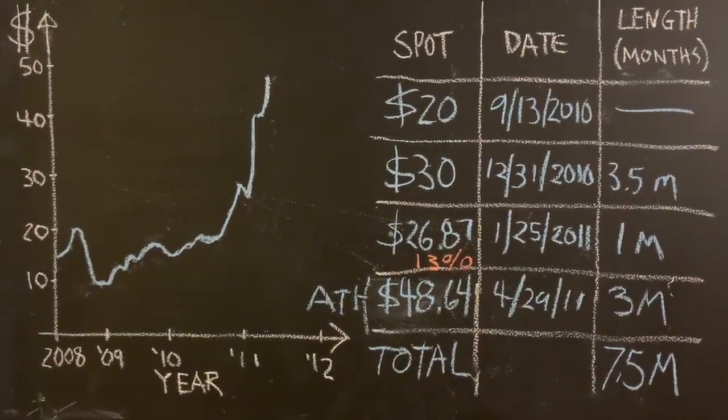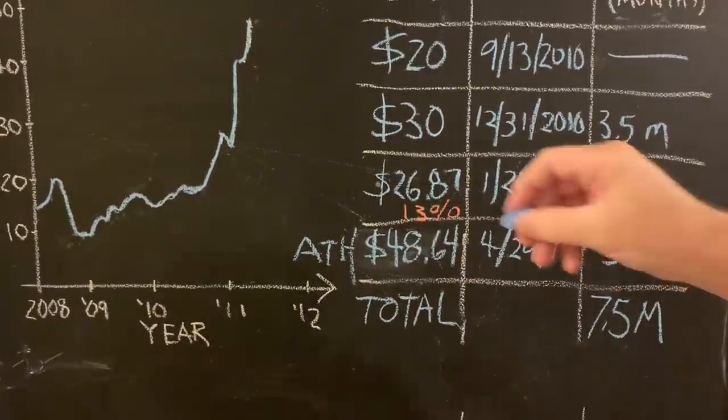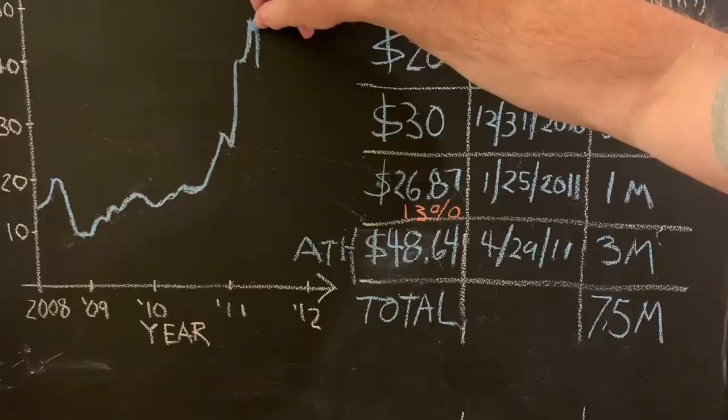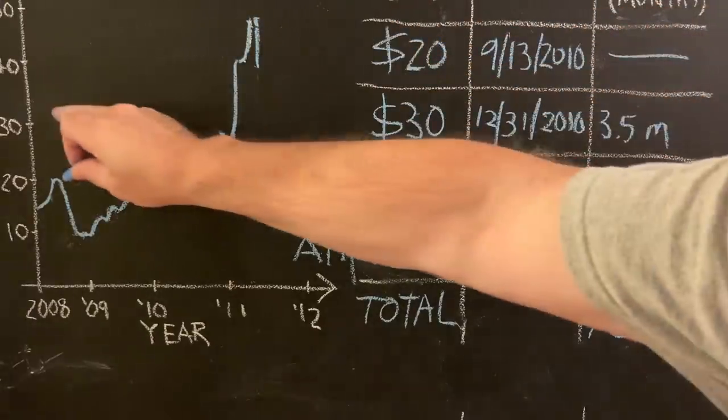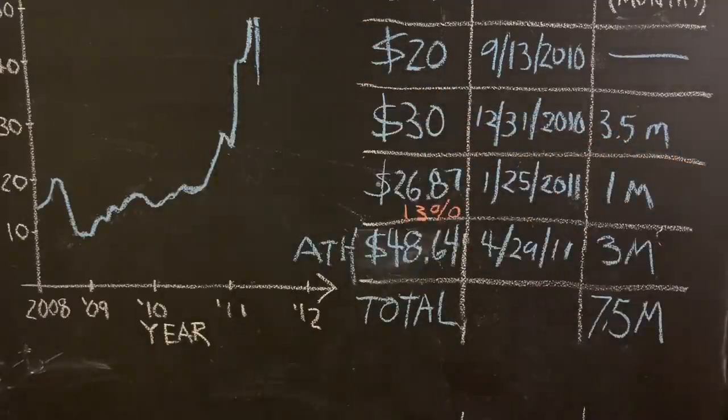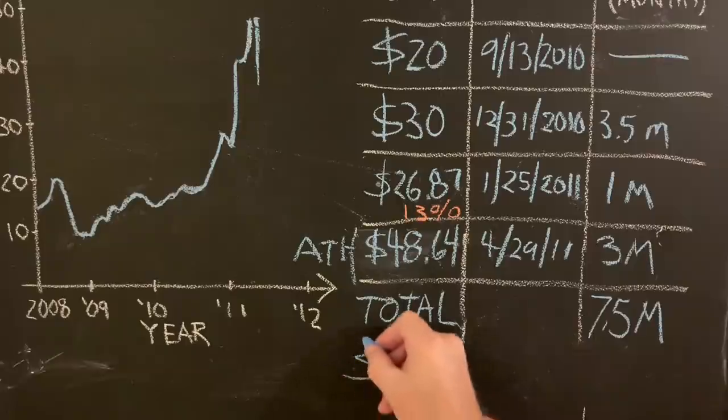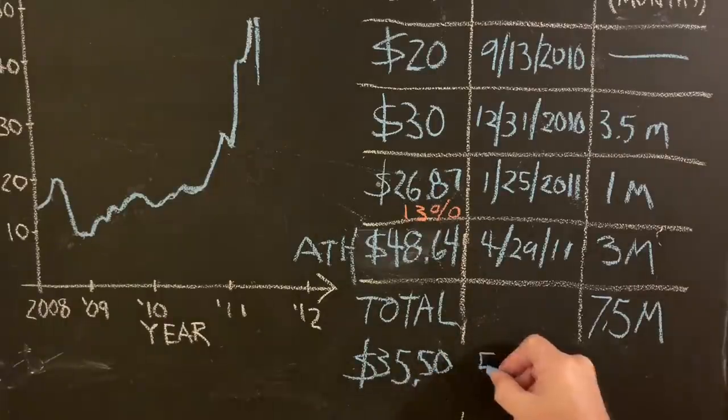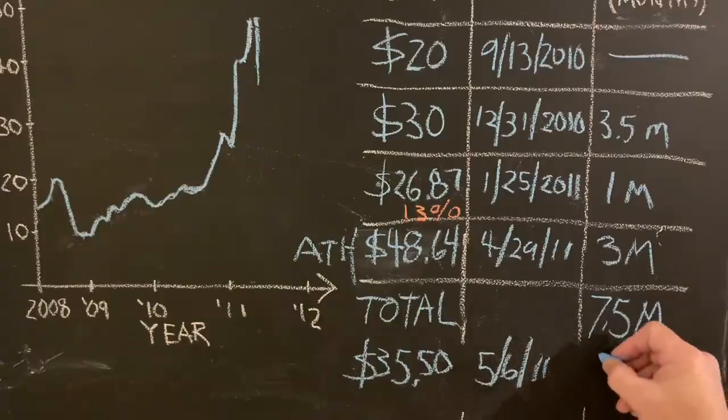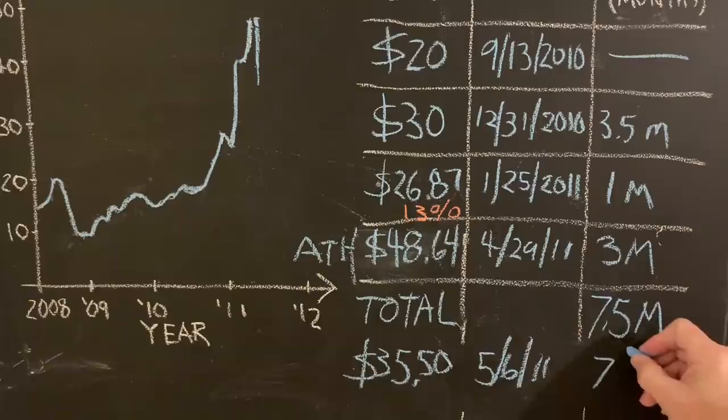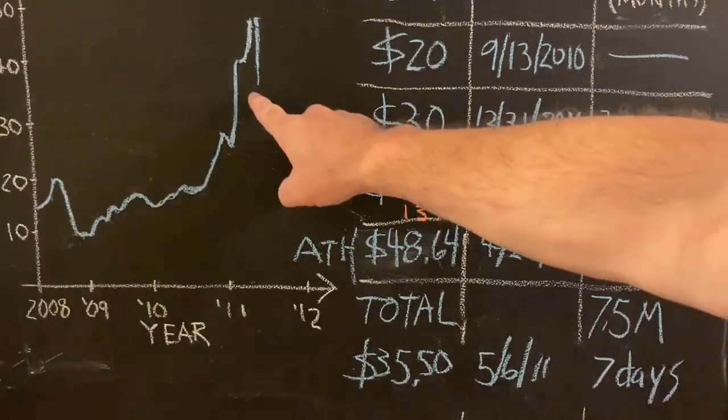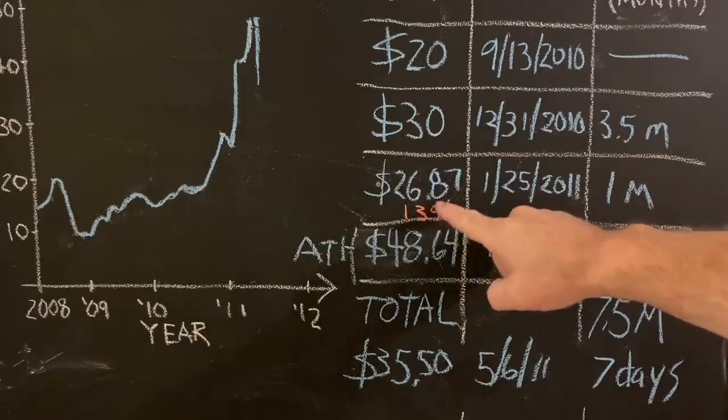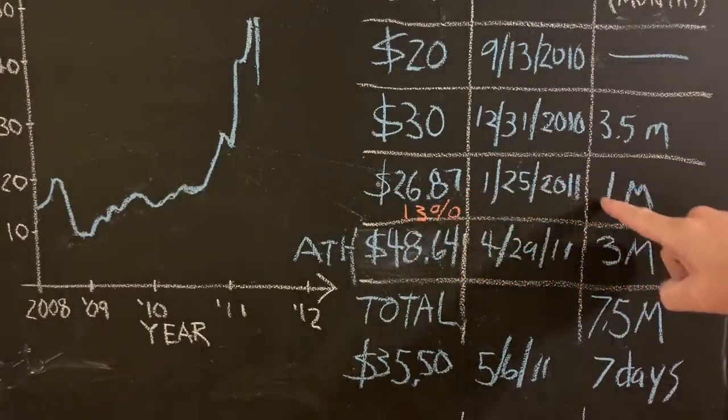And just to be fair, and then this happened. It dropped. It dropped to $35.50 by May, which was seven days. And then it kind of languished for a couple of few years. And then it dropped down into the 15 to 20 for the next six, seven years.